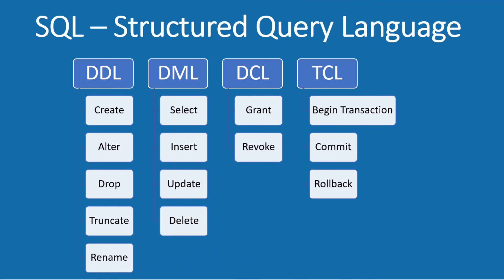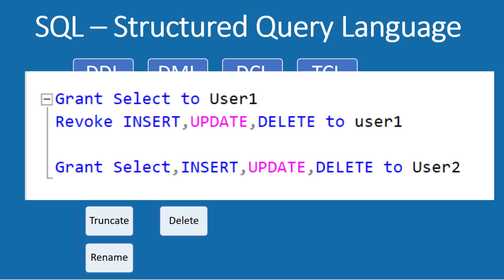The next command is DCL, Data Control Language. It is mostly used by the DBA to provide user-level security to the database. The commands are grant and revoke. For example, you can allow user1 to only select data, and user2 to only insert, update, and delete data. You can control access using DCL commands.